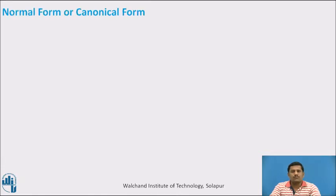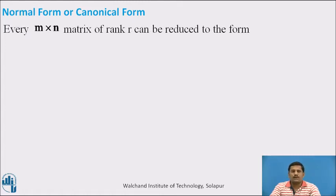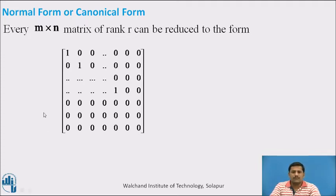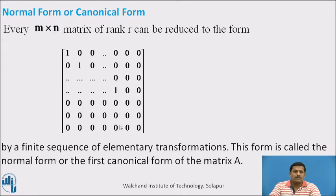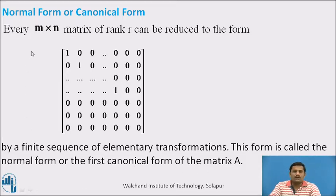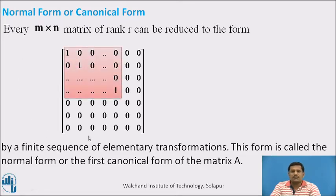Let us see what is normal form or canonical form. Every m×n matrix of rank R can be reduced to this form by a finite sequence of elementary transformations. This form is called the normal form or the first canonical form of the given matrix A. Whatever the given matrix of order m×n is, it can always be reduced to this form. This form has special characteristics — there is one block of elements looking like an identity block, and the remaining are zero blocks.